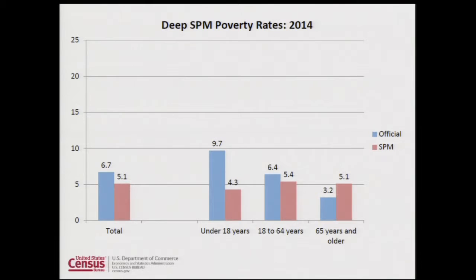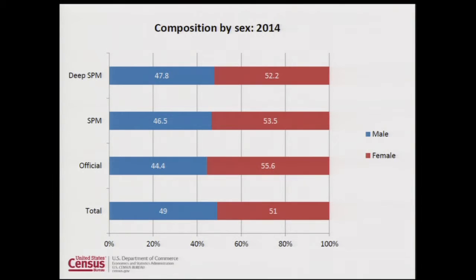Looking at the deep poverty rates for the two measures, the bars are a bit different from overall poverty rates: the SPM deep poverty rate is lower than the official rate, the same for children, and there's also a difference in the working-age adult measures. Looking at the deep poverty population by characteristics, the composition by male or female shows a slightly higher proportion of males in the deep poverty population than in the SPM poor overall.